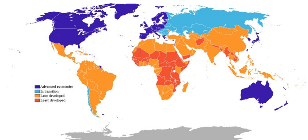A developed country, industrialized country, more developed country, or more economically developed country, is a sovereign state that has a developed economy and advanced technological infrastructure relative to other less industrialized nations. Most commonly, the criteria for evaluating the degree of economic development are gross domestic product, gross national product, the per capita income, level of industrialization, amount of widespread infrastructure and general standard of living.